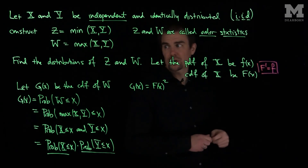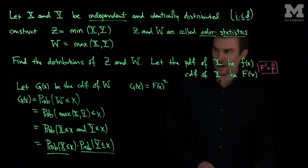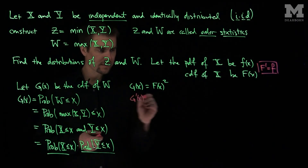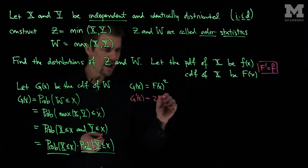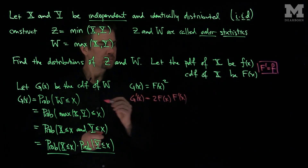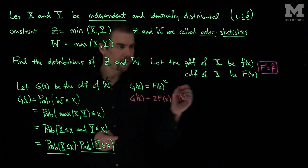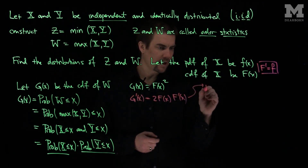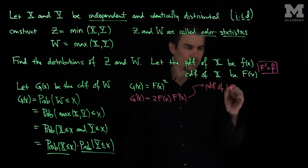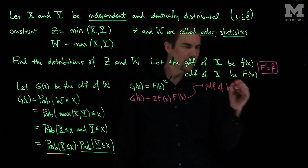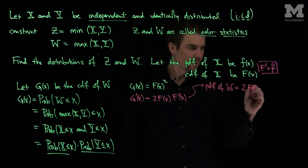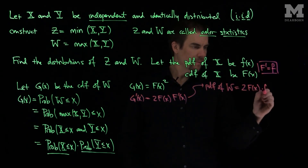So if we want to find the distribution of w, we have to differentiate this. So G prime of x is going to be two F of x times F prime of x. This implies the pdf of w is two times the cdf of either x or y times the pdf.